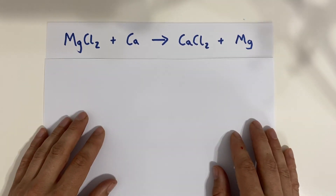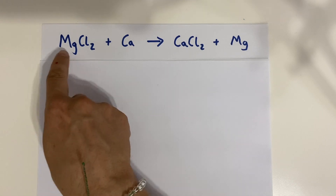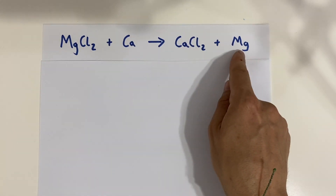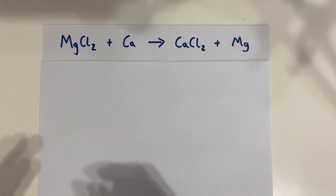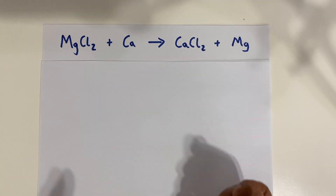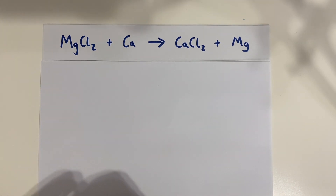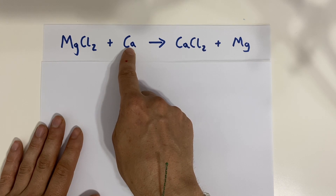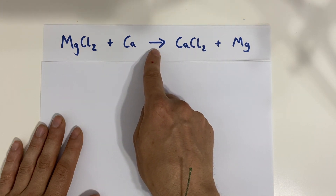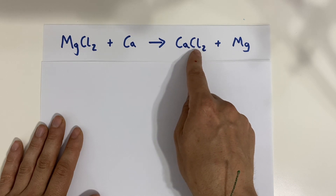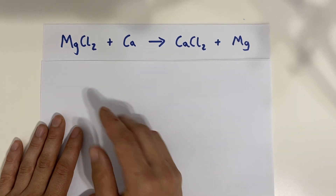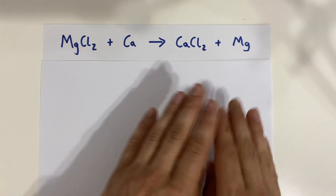Let's have a look at a symbol equation. This is the symbol equation for magnesium chloride reacting with calcium to form calcium chloride and magnesium. It's really important to understand that in a chemical reaction you don't create anything new or destroy anything — you just have a rearrangement of atoms. So here we've got magnesium bonded to chlorine and calcium by itself, and after the reaction we've got calcium bonded with chlorine and magnesium by itself. We haven't created any new atoms or destroyed any atoms — we have just rearranged where the atoms are placed.